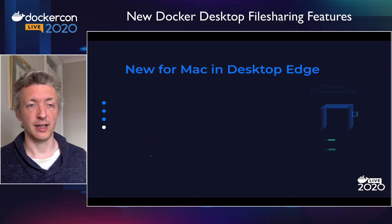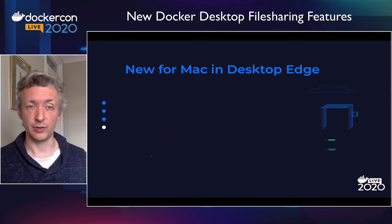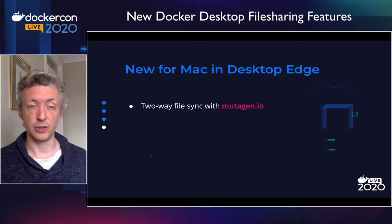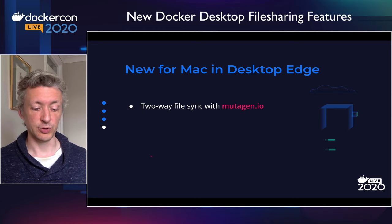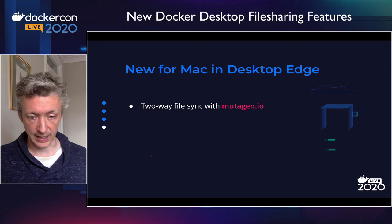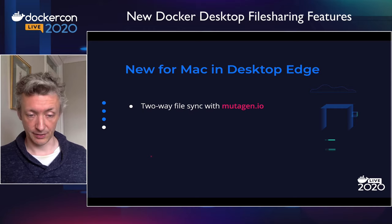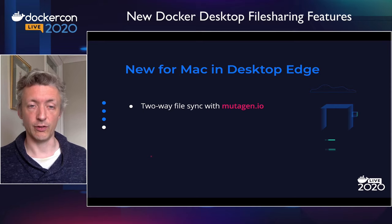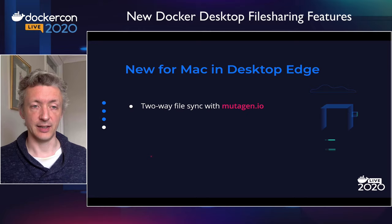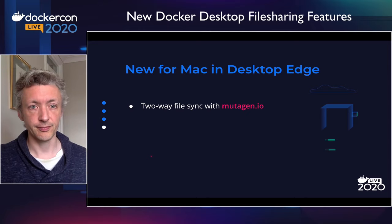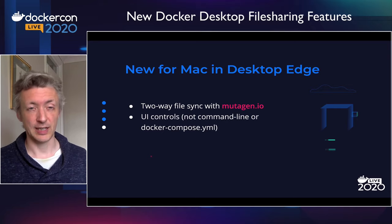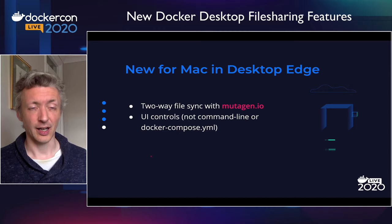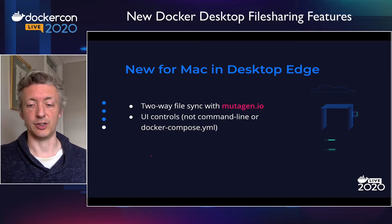To mitigate that and make life much easier and better, we have a new feature in Desktop Edge. This uses a tool called Mutagen, which is a very nice two-way file sync tool. Rather than remoting all the accesses from the VM to the host on every read and every write with another RPC, instead we do an explicit upfront sync where all the files are copied. Then Mutagen takes care of watching for file updates, staging the changes, and sending them in both directions. And to simplify the user experience rather than adding yet another command-line option or flag or having people modify their Docker Compose YAMLs, we decided to put the controls in the GUI.